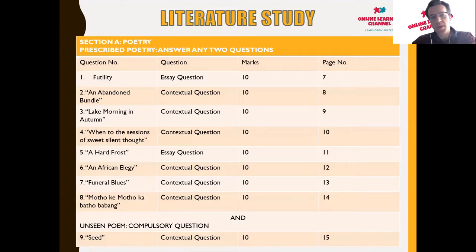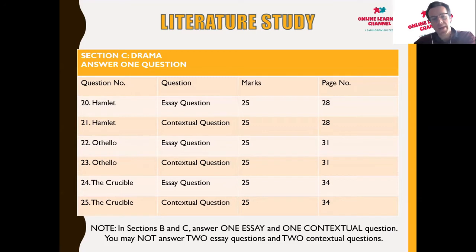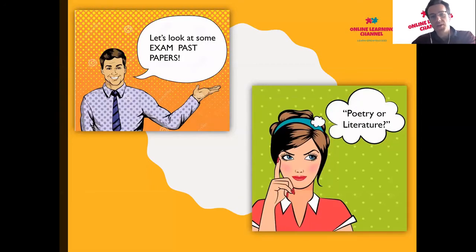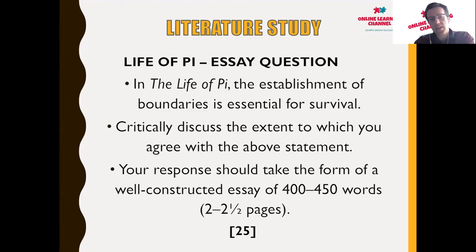This table indicates the various poems and novels covered in the series. Previously we focused on Animal Farm, but today we're looking at the Life of Pi. There is also a table showing various dramatic productions. Now let's look at a past exam paper — specifically Section B, the essay question, which focuses on the Life of Pi.